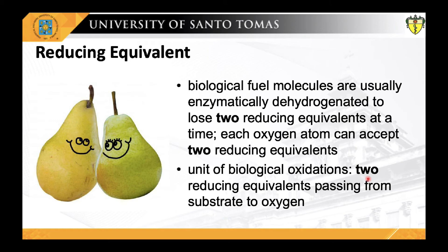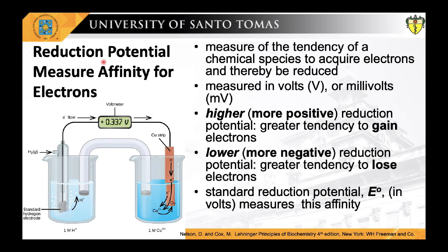Let us now move on to the concept of reduction potential. When two conjugate redox pairs are together in solution, electron transfer from the electron donor of one pair to the electron acceptor of the other may proceed spontaneously. The tendency for such a reaction depends on the relative affinity of the electron acceptor of each redox pair for electrons. The standard reduction potential, denoted E°, with units in volts, measures this affinity. Hydrogen has the lowest redox potential at −0.42 V, while oxygen has the highest at +0.82 V. The relative positions of redox systems allow prediction of the direction of electron flow between redox couples.